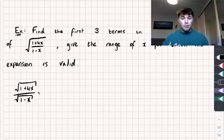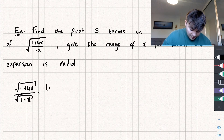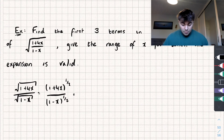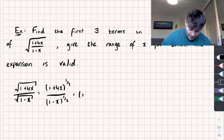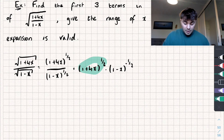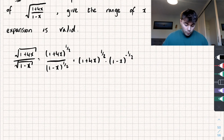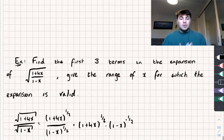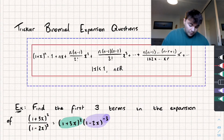A square root is the same as a power of one half, so we have (1+4x)^(1/2) divided by (1-x)^(1/2). Like in the previous example, the denominator is the same as multiplying by (1-x)^(-1/2), giving (1+4x)^(1/2) × (1-x)^(-1/2). I'll calculate the expansion of each part and multiply them together.